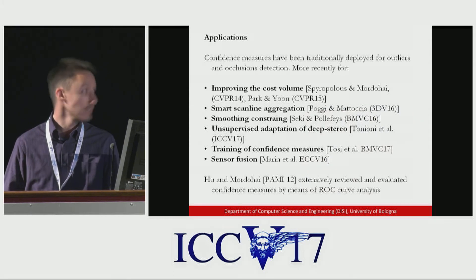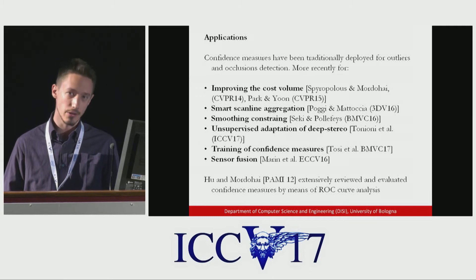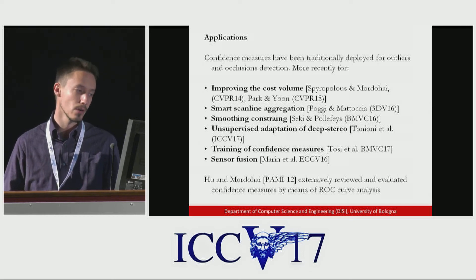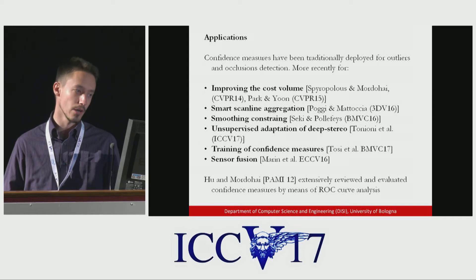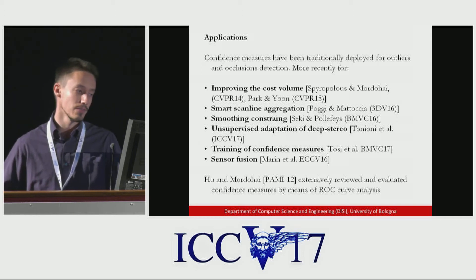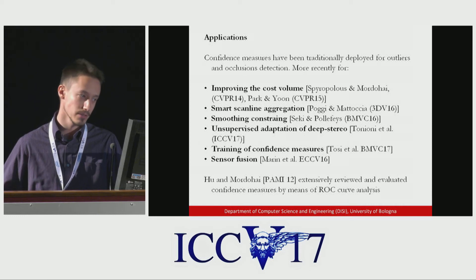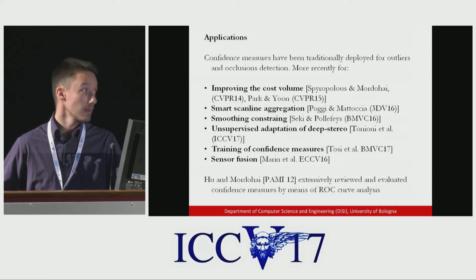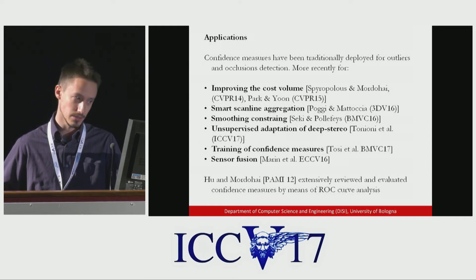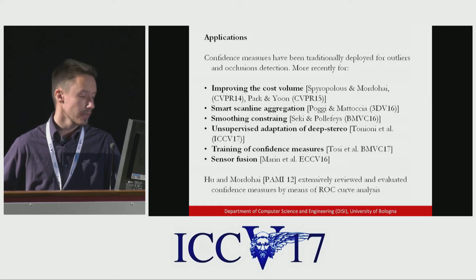But why do we need a confidence measure? Traditionally, confidence measures are used to detect occlusions and outliers in the disparity maps, but more recently we have a number of novel applications — in particular to improve the accuracy of disparity maps by detecting reliable ground control points, to improve the quality of the cost volume, or by plugging the confidence inside popular stereo pipelines such as the semi-global matching algorithm. More recently, we also had unsupervised adaptation of deep stereo presented here at ICCV this year, self-supervised training of more robust confidence measures, and sensor fusion.